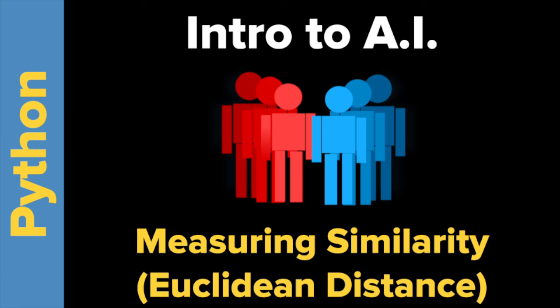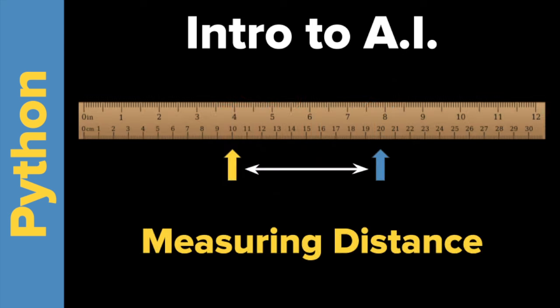Welcome to Intro to AI: Measuring Similarity Using Euclidean Distance. Basically, what we're looking at today is trying to measure the similarity between two things. I'm not talking about two objects like length, width, and height, even though I have a ruler on the screen. What I'm talking about is the similarity between people — if we were trying to determine who is most compatible with whom in a group, how would we measure that? We're going to do that by measuring distance.